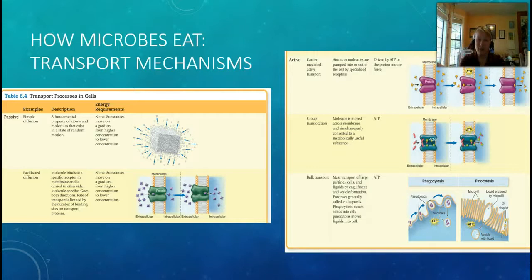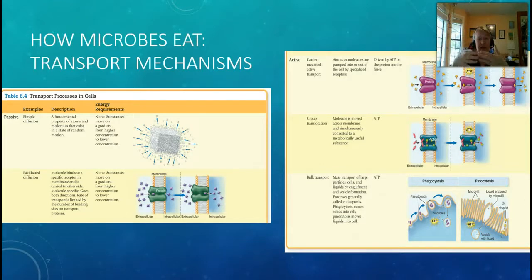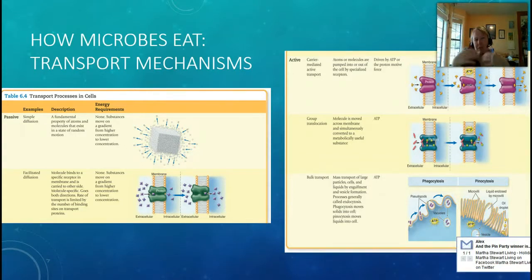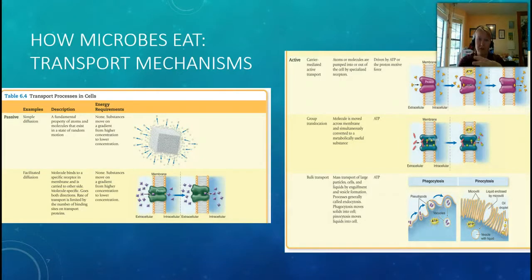The last type is bulk transport, which has two forms: phagocytosis and pinocytosis. In phagocytosis — cell eating — the cell brings in large particles and digests them in the phagosome. In pinocytosis — cell drinking — little droplets, mainly water, are brought into the cell through a smaller endocytosis process. These are the two big types of bulk transport; they bring in particles and use some of their membrane to capture and bring them into the cell.